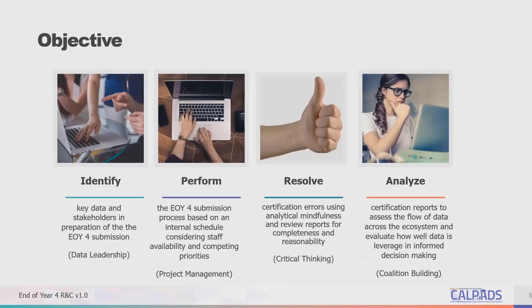The objective for today's training is first to help you identify the data that's going to be reported, the key stakeholders involved in the submission, in that you would be developing or exhibiting data leadership skills. The second objective is to assist in developing the ability to perform the EOY-4 submission based on an internal schedule considering staff availability and competing priorities — a skill related to project management.